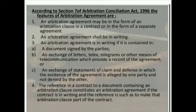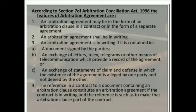Now, according to Section 7 of the Arbitration and Conciliation Act, 1996, we will see what the main features are which are given under this section. Number 1: the Arbitration Agreement may be in the form of an Arbitration Clause in a contract or in the form of a separate agreement.